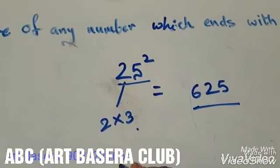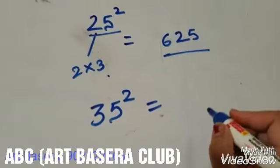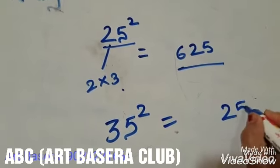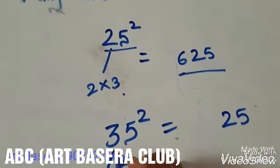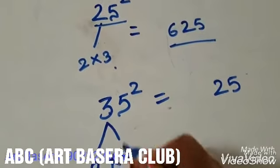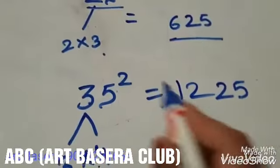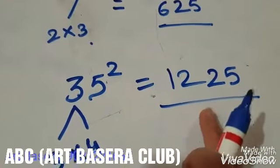Take one more example. Square of number 35. What we will do? We will write just 25 and what is 3 into 4? The number which comes after 3, 3 into 4 is 12. So the square of 35 is 1225.